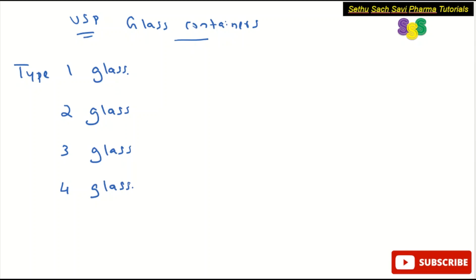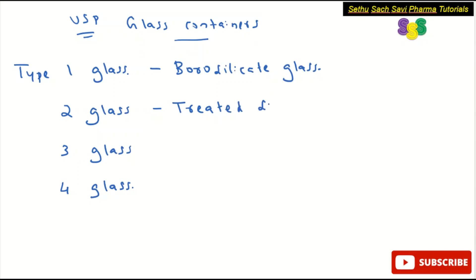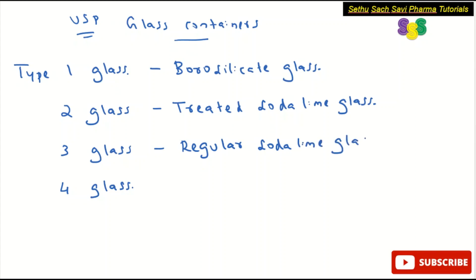Type 1 is made up of borosilicate glass, also called borosilicate glass. Type 2 is the treated soda lime glass. Type 3 is called regular soda lime glass, whereas Type 4 is also called general purpose soda lime glass.